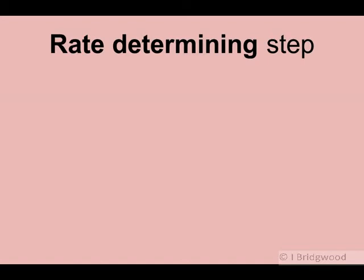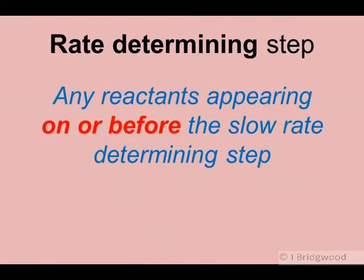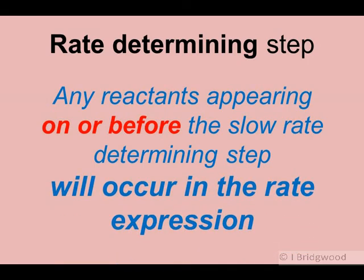Any changes in concentrations of reagents that occur on or before that slow rate-determining step will have an effect on the rate of that slowest step. Anything that occurs after that slowest step will not have an effect on its rate. Therefore, any reactants appearing on or before that slowest step will have an effect on the rate of reaction and must appear in the rate expression. Anything that reacts after that slow rate-determining step will not appear in the rate expression.